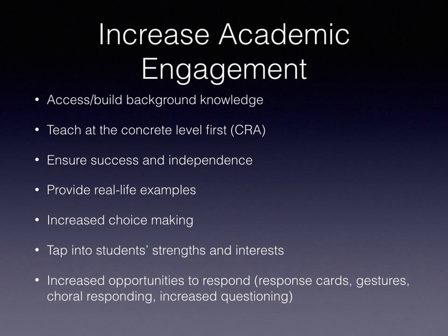Other strategies for active engagement include providing more choices — of materials, activities, who they work with, what they're learning, and topics. Tapping into students' strengths and interests as much as possible. Increasing opportunities to respond during group lessons through response cards, gestures, choral responding, and increased questioning. These strategies ensure students with disabilities or other challenges are not passive learners just sitting and receiving information. Additional examples include having more partner activities instead of having students sit and listen or work independently, and providing guided notes during lecture-based activities and other types of group instruction.